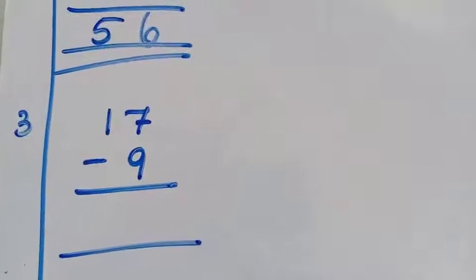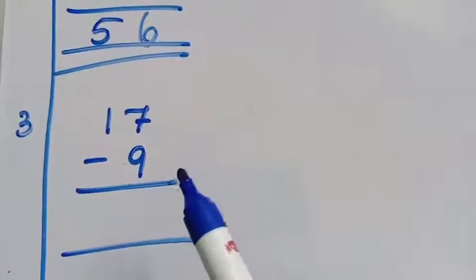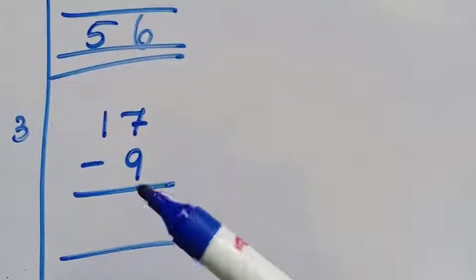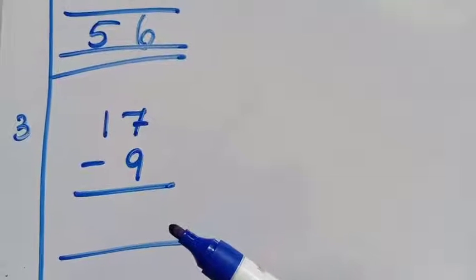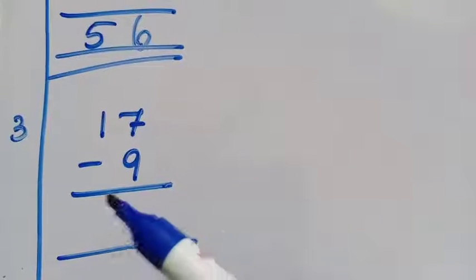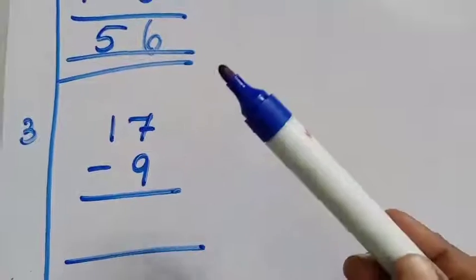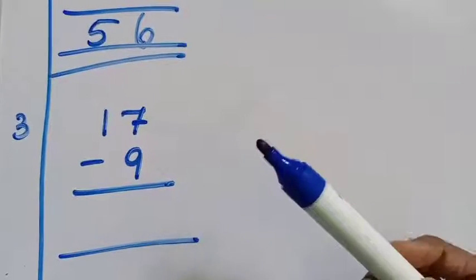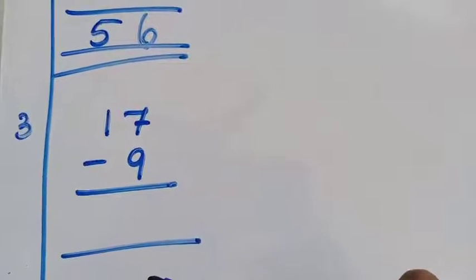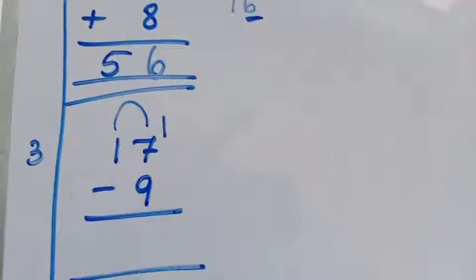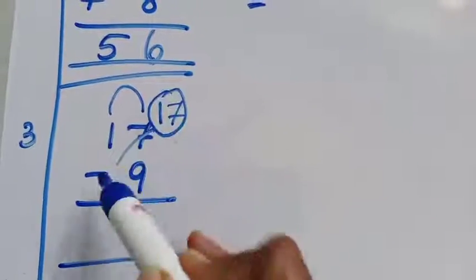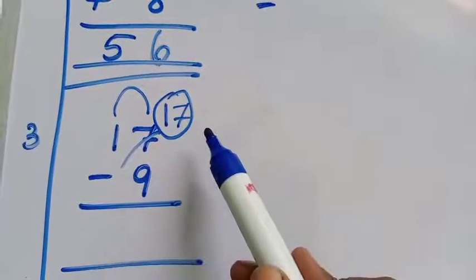Write the digits: 17 minus 9. This is the 1's place and this is the 10's place. Now 7 minus 9 — is it possible, children? No, it is not possible because 7 is smaller than 9. So what do we do? We need to borrow 1, and write the same digit 7 here. Now we have 17 in the 1's place.